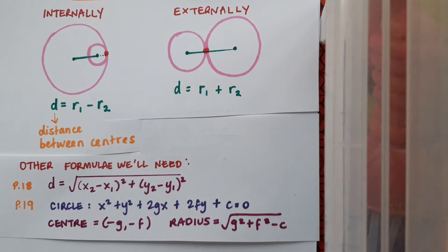Again we'll need to be aware of these formulae, the formula for distance from the log tables on page 18 and the formula for the circle's general form and its centre and radius.